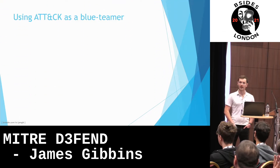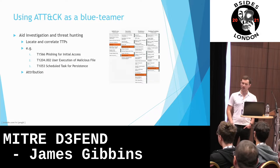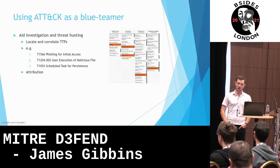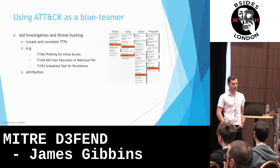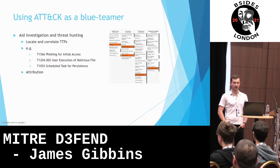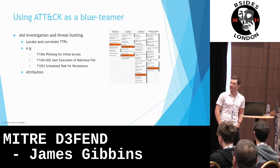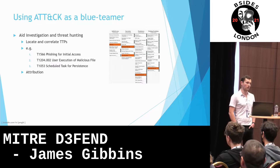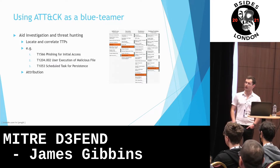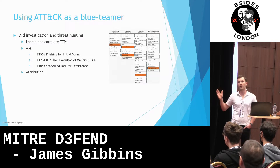ATT&CK can be used in a number of ways as a Blue Teamer. You can use it to aid investigation and threat hunting. Using the framework, you can know what to look for, what stage of an attack you might be in, and what might happen next. For example, if you get an email with a dodgy attachment, the next thing to look for would be user execution of a malicious file. If you get evidence of that happening, the next thing to look for would be scheduled tasks, which could be used for persistence. In this way, you can use it as a cyber kill chain. It can also be used for attribution, because the framework gives information on which APTs have been found to use which combination of attacks.